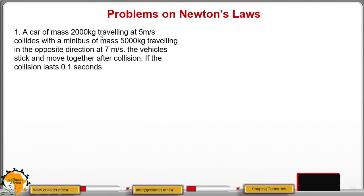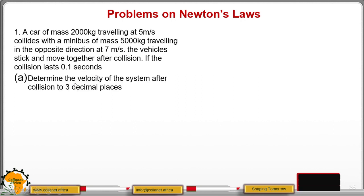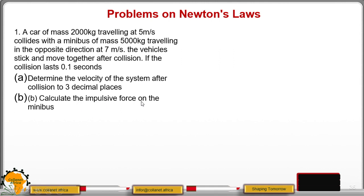A car of mass 2000 kg traveling at 5 meters per second collides with a minibus of mass 5000 kg traveling in the opposite direction at 7 meters per second. The vehicles stick and move together after collision. If the collision lasts 0.1 seconds, determine the velocity of the system after collision to 3 decimal places. Then part b, calculate the impulsive force on the minibus. We proceed as follows.